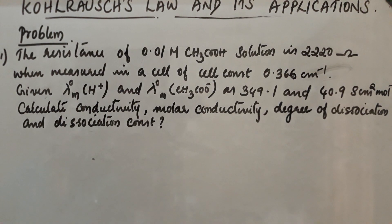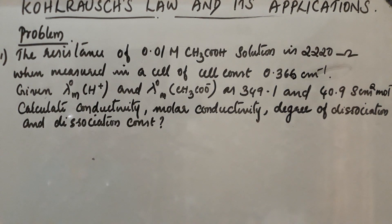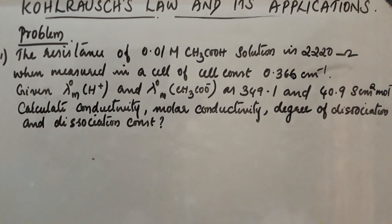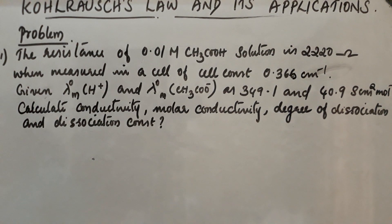Let us do one problem. The resistance of a 0.01 molar acetic acid solution is 2220 ohm, measured in a cell with cell constant 0.366 cm⁻¹. The limiting molar conductivity of H⁺ and CH₃COO⁻ are given as 349.1 and 40.9 S·cm²·mol⁻¹ respectively. We need to calculate conductivity (κ), molar conductivity (λ_M), degree of dissociation (α), and dissociation constant (K_a).